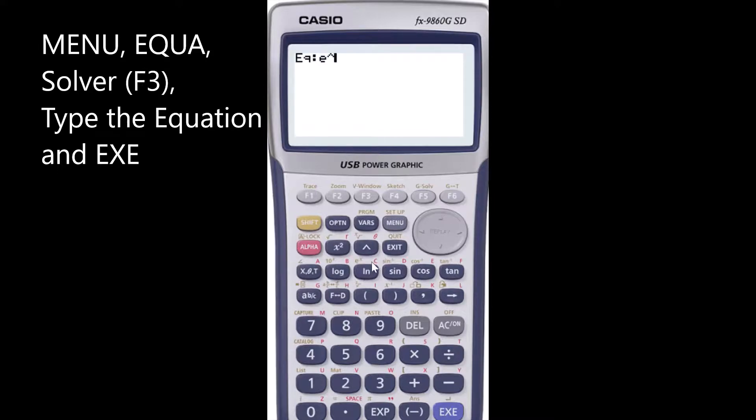Then type in your equation. So we've got e to the power of—so shift ln will give you e—so e to the power of minus lambda, and lambda is unknown variable x in this case. So is equal to—shift dot—is equal to 0.35, which is the probability.